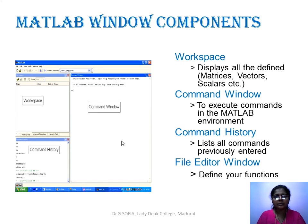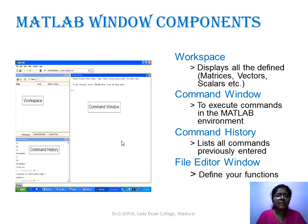The MATLAB window components include workspace, command window, command history, and file editor window. The workspace is on the left top and displays all defined values — whether matrices, vectors, or scalars. Command history holds all the previously executed commands, listing all commands entered previously, and is located below the workspace.